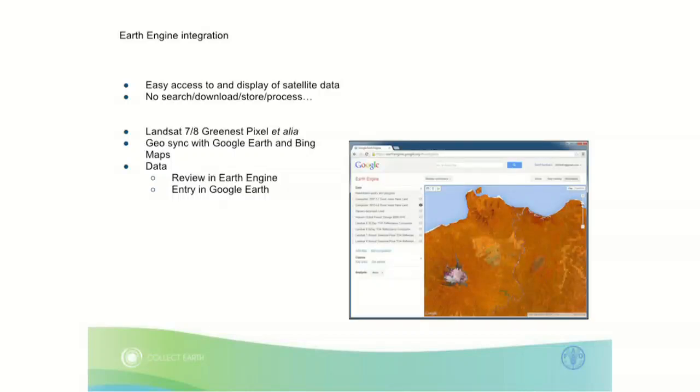The connection with Earth Engine is very important because our users are not remote sensing experts — they are forest experts from different countries. But with this tool, they can see their land in Google Earth with very high resolution imagery, recognize it, then go to Earth Engine, recognize the same features, and eventually analyze them. In Earth Engine, we have a geosync with Google Earth and Bing Maps, so at each plot the user moves, the other two windows are synchronized and move at the same time.